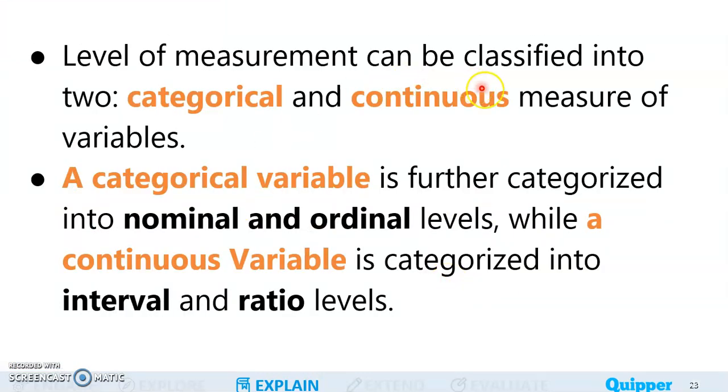The level of measurement can be classified into two. We have categorical and continuous measure of variables. A categorical variable is further categorized into nominal and ordinal levels, while a continuous variable is categorized into either interval or ratio levels. So we really have four types of variables under the level of measurement: nominal, ordinal, interval, and ratio levels.